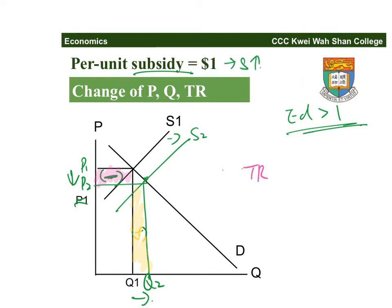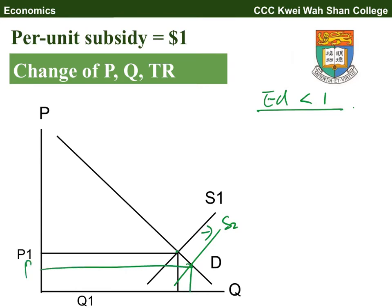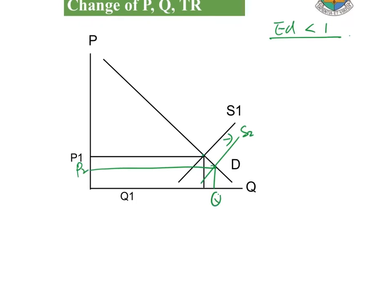If we put the equilibrium point on the lower part of the demand curve, elasticity of demand is less than one — inelastic demand. With supply increasing due to the subsidy, we get a new equilibrium P2 and Q2: price drops, quantity rises. The price drop creates a minus and quantity rise a plus, but the increase in total revenue is smaller than the decrease, so total revenue drops under inelastic demand.